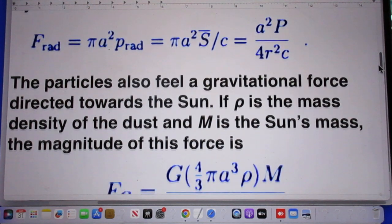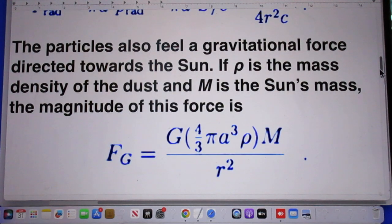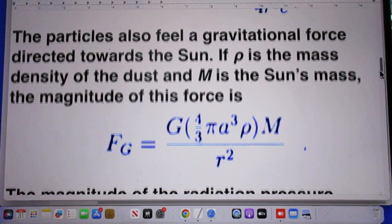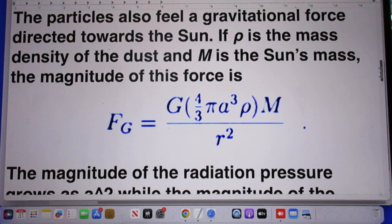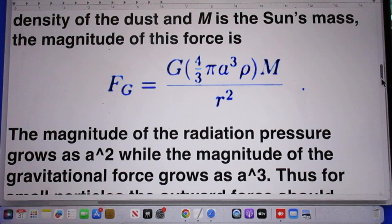The particles also feel a gravitational force directed towards the sun. If rho is the mass density of the dust, and M is the sun's mass, then the magnitude of this force is given by the following equation. Totally trivial. Newton's law of gravity.